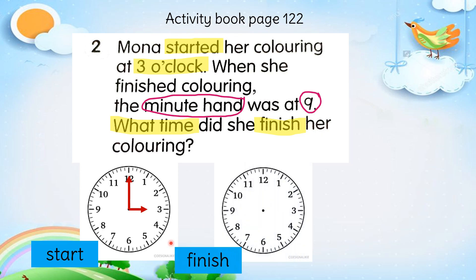Ok, when she finished — apabila dia selesai — dia kata minute hand was at 9. The minute hand at the beginning is at 12, and then moves to 1, 2, 3, 4, 5, 6, 7, 8, and 9. Minute hand stops at 9, so it will become like this. And the hour hand also will move — jarum pendek juga akan bergerak. So now you have to write this time as the answer — anda perlu tuliskan jawapan jam ini sebagai jawapan.